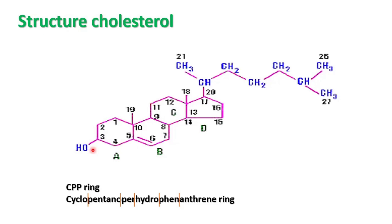In the body, cholesterol exists as a cholesterol ester — that is, cholesterol is attached with a fatty acid on the third carbon at the hydroxyl group. Liver and intestine are the major sites of cholesterol synthesis, and this pathway occurs in the cytoplasm and endoplasmic reticulum.